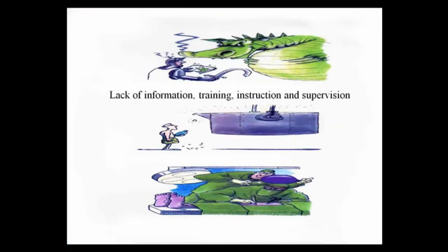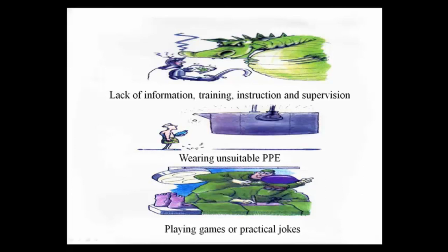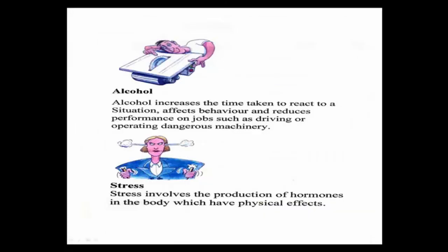Other causes of accidents include lack of information, training, instruction and supervision — which is the responsibility of your employer — wearing unsuitable personal protective equipment, and playing games or practical jokes. Drinking alcohol while working can seriously compromise your safety, as alcohol is a depressant, not a stimulant, and slows your reaction times. This is especially dangerous when driving or working with dangerous machinery. Stress also involves the production of hormones in the body which have physical effects.